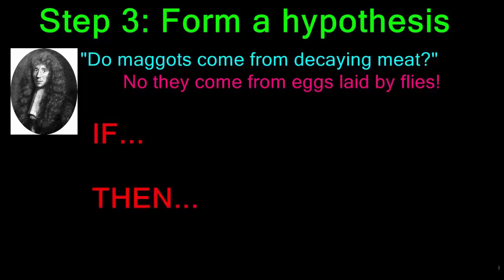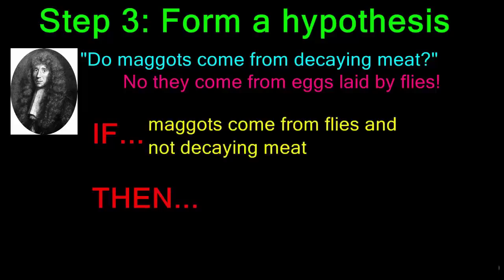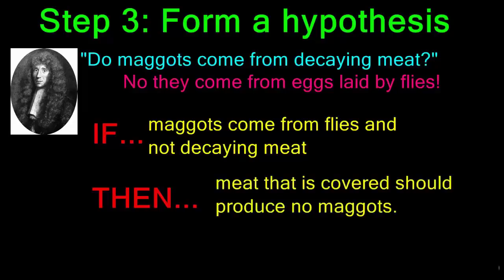Rather than just phrase the hypothesis like that, we'll put it in an if-then format. As far as Redi is concerned: if maggots come from flies and not decaying meat, then meat that is covered should produce no maggots. This gives him a good outline for designing an experiment to answer his question.